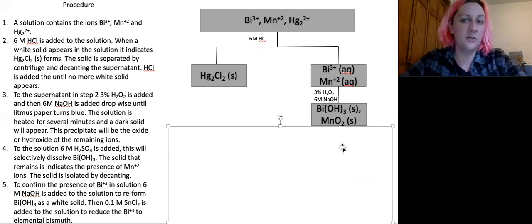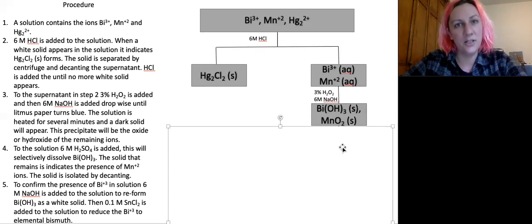All right, I add three percent hydrogen peroxide and six molar sodium hydroxide, and I get the hydroxide of bismuth and the oxide of manganese. Now I'm not including that I'm heating it. I'm not including that the litmus paper turns blue. These are details that I don't need to include. I'm trying to limit the information I communicate so people can focus on what's important, and what's important is what are the transformations of the three ions I'm interested in, bismuth, manganese, and mercury.